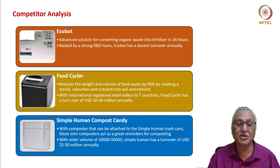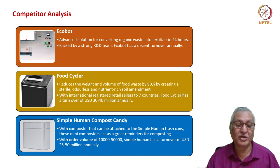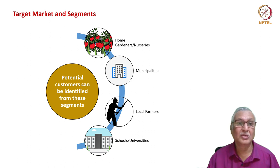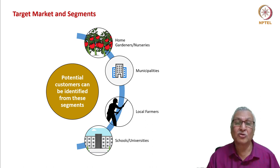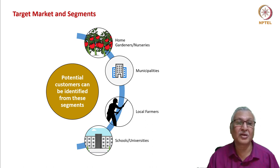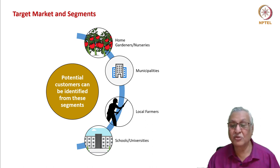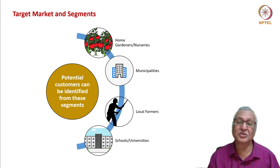Competitors in the field: Ecobot converts organic waste into fertilizer in 24 hours; FoodCycler reduces food waste weight and volume by 90 percent, operating in seven countries with a turnover of USD 30–40 million annually; SimpleHuman's compost caddy attaches to trash cans, with a turnover of USD 15–25 million annually. Potential target markets range from home gardeners and nurseries, municipalities, local farmers, to schools and universities.